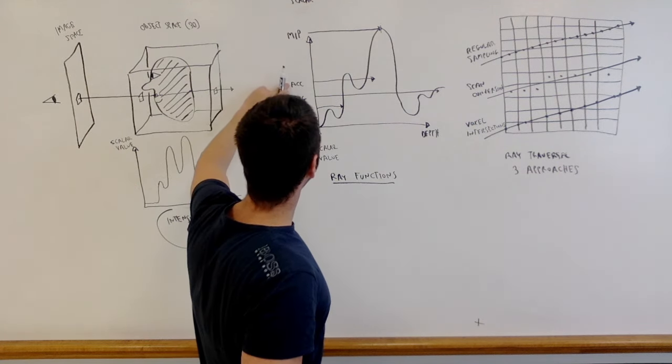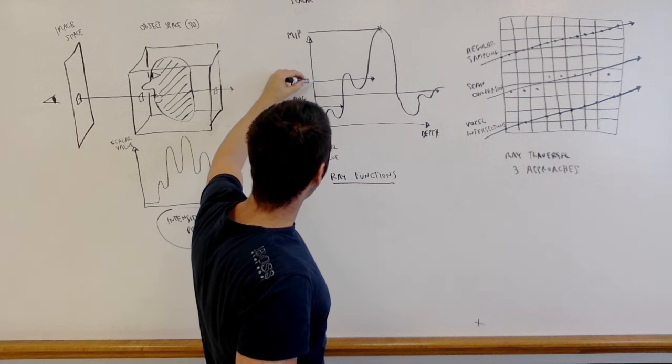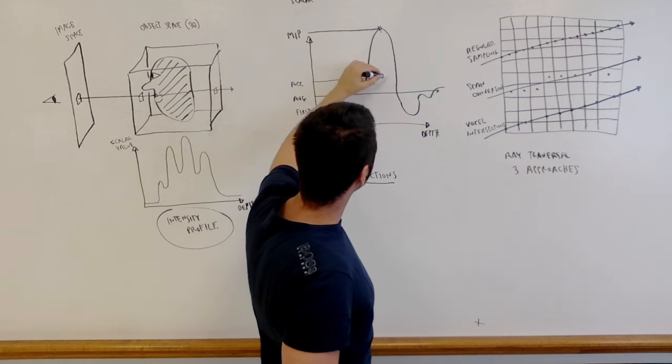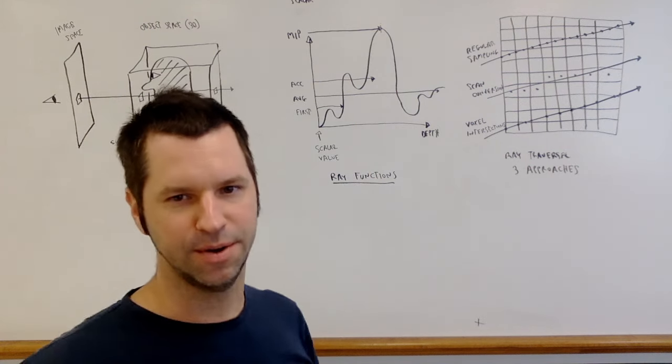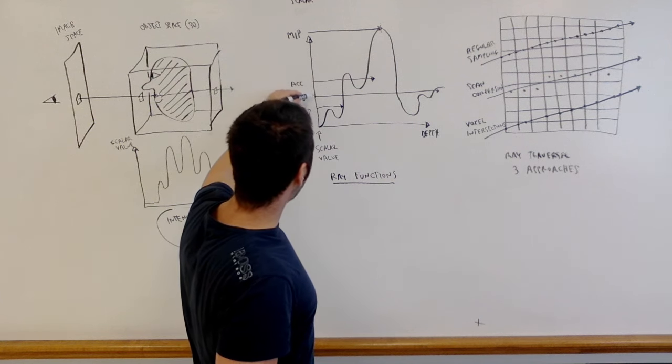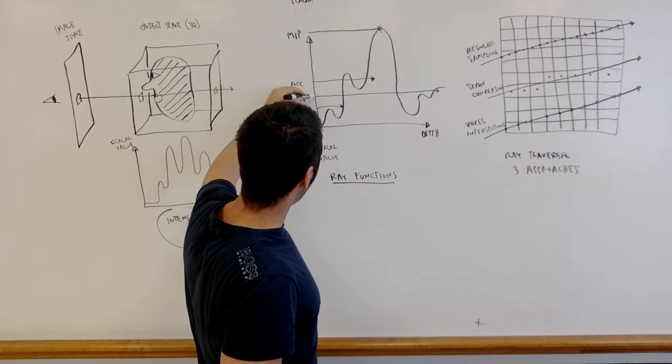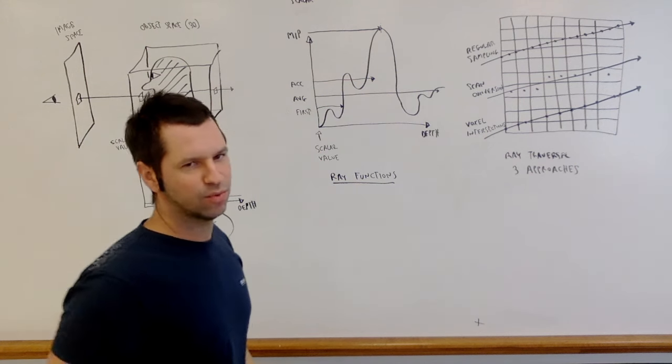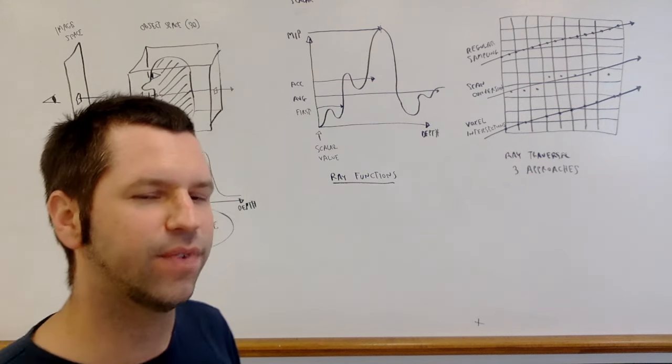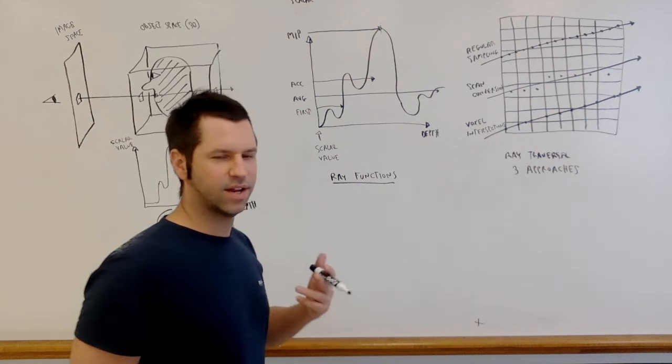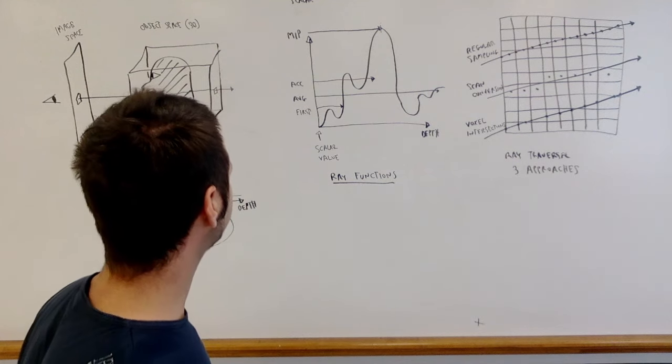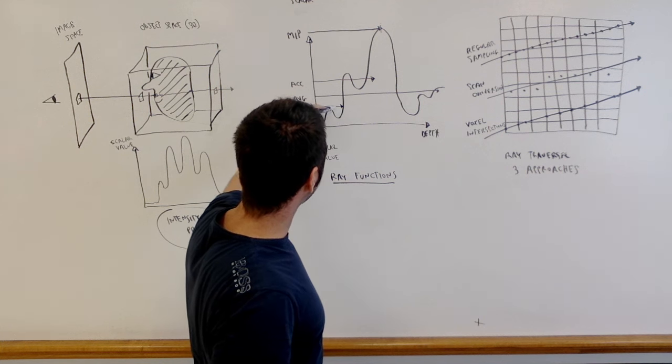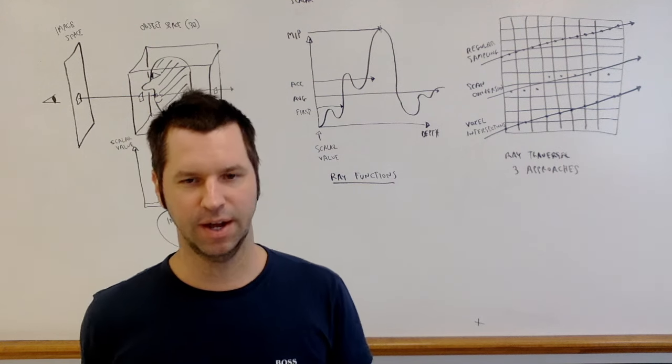This is an accumulation ray function and it simply adds up all the values that it encounters along the way. So it will sample the volume, traverse the depth, and it will simply add the values together. This is an average function. The average function again will add the different scalar values together and then it will divide the value by a normalization factor, the number of values that it samples. So it takes an average of the samples. And then we have something called a first hit ray casting. And this simply returns for every ray the first value that it encounters.